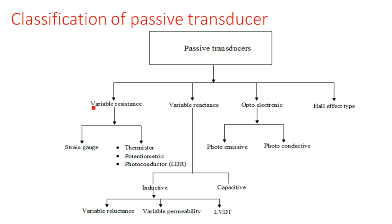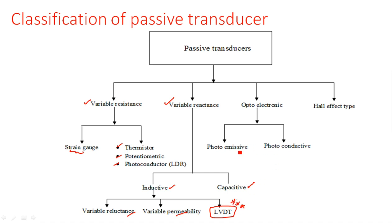In this subject we discuss variable resistance type and variable reactance types. Variable resistance type includes: thermistor, potentiometric device, photo conductor (light dependent resistor). Variable reactance type — reactance being either capacitive or inductive — includes inductance variation and capacitance variation, covering variable reluctance, variable permeability, and LVDT, which is very important. Optoelectric types include photo emissive or photo conductive, and Hall effect transducers complete the classification of passive transducers.